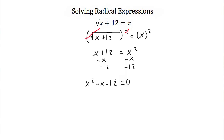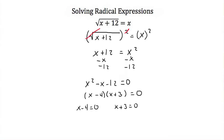We can factor x squared minus x minus 12 into (x minus 4)(x plus 3), still equal to 0. By the zero product property, if either binomial equals 0, the whole product is 0. Setting x minus 4 equal to 0 gives x equals 4. Setting x plus 3 equal to 0 gives x equals negative 3. So our potential solutions are x = 4 and x = negative 3.